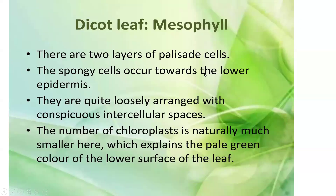Palisade cells occur towards the upper epidermis. They are columnar cells with scanty intercellular spaces, arranged more or less at right angles to the upper epidermis. Chloroplasts are abundantly present, particularly along the radial walls of the cells. There are two layers of palisade cells. The spongy cells occur towards the lower epidermis and are quite loosely arranged with conspicuous intercellular spaces, with a smaller number of chloroplasts.